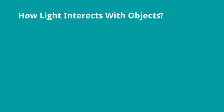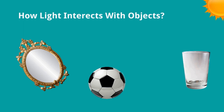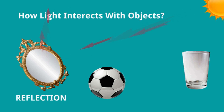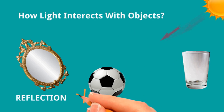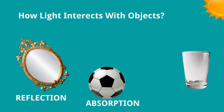Now let us consider how light interacts with objects. Consider objects like a mirror, a football, or glass. Light from the source interacts differently with different materials. Light falling on the mirror is reflected — this is reflection. For the football, it falls on the football and the football absorbs all the rays, so no light comes back — this is absorption.